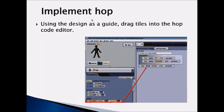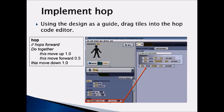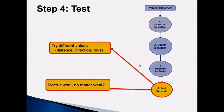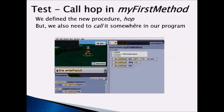Now we have created a hop procedure. We add a comment, and taking the design into consideration, we write our code into the editor area to make the White Rabbit hop. This is how a complete hop procedure would look like. The most important step is test — call the hop procedure in my first method.